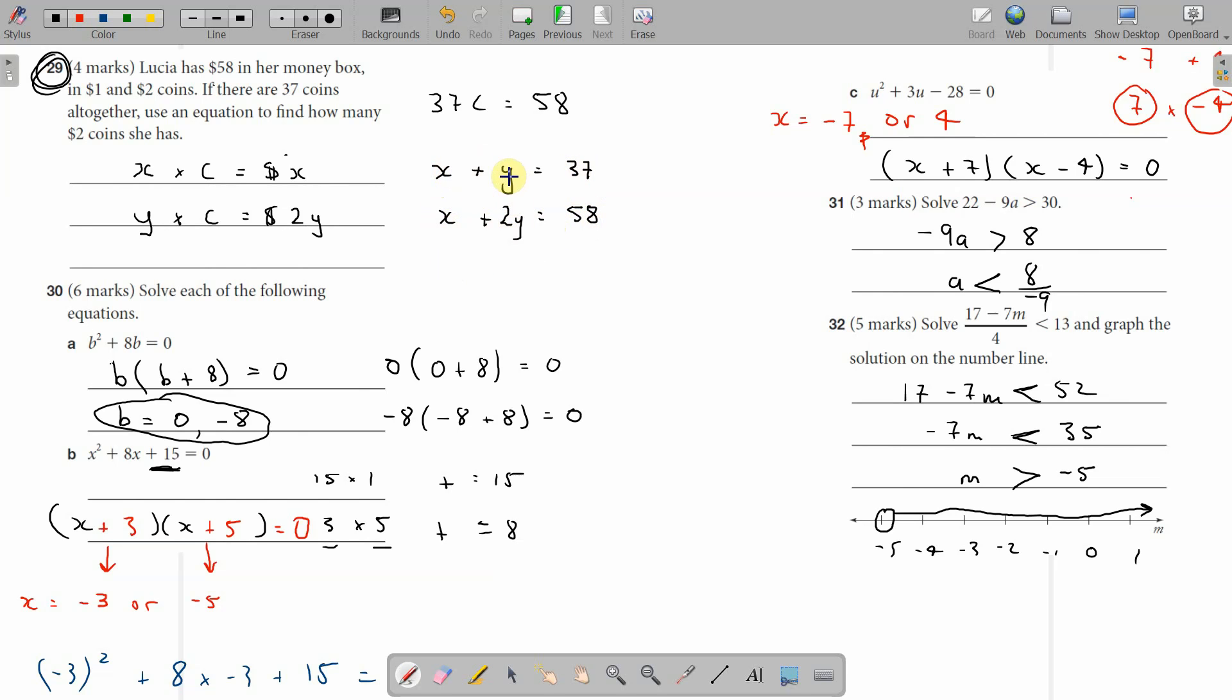The number of $1 coins plus twice the number of $2 coins equals $58. Since I've got both equations, I'll combine them by subtraction. I'll swap them around so the large number is on top to avoid negatives.